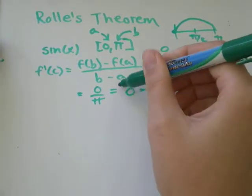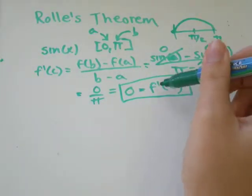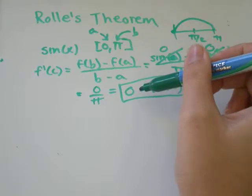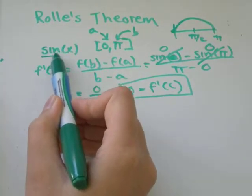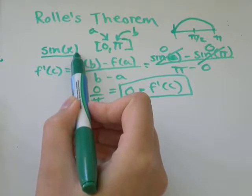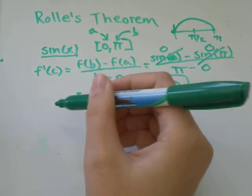f prime of c equals zero, and that's how we know we're using Rolle's Theorem. It's because the derivative at point c equals zero. So then what we have to do is go back into our original f of x, which in this example was sin x, and we'll just change that to be f of c.